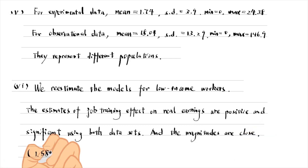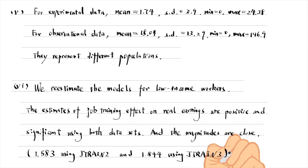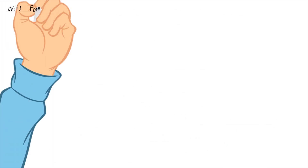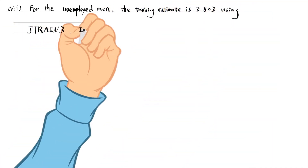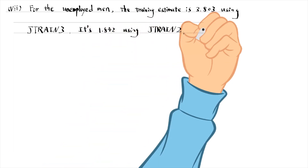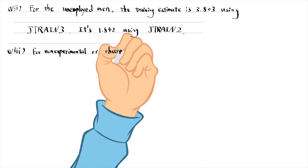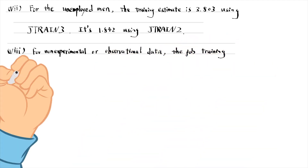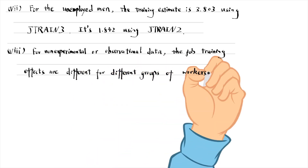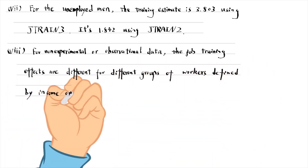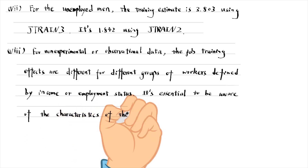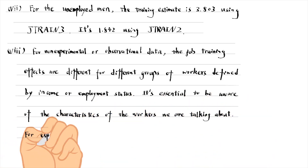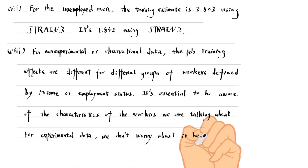We also re-estimate the simple regressions for unemployed men. The training estimate is 3,803 using observational data and 1,842 using the experimental data. For non-experimental or observational data, the job training effects are different for different groups of workers. It is essential to be aware of the characteristics of the workers we are estimating. For the experimental data, we don't worry about it because the assignment to the training is random.